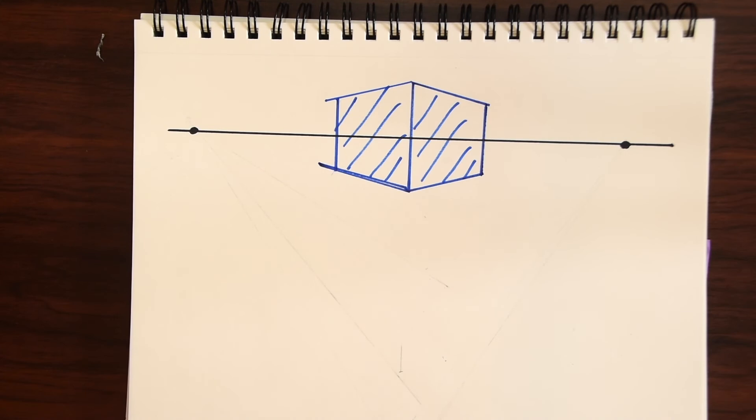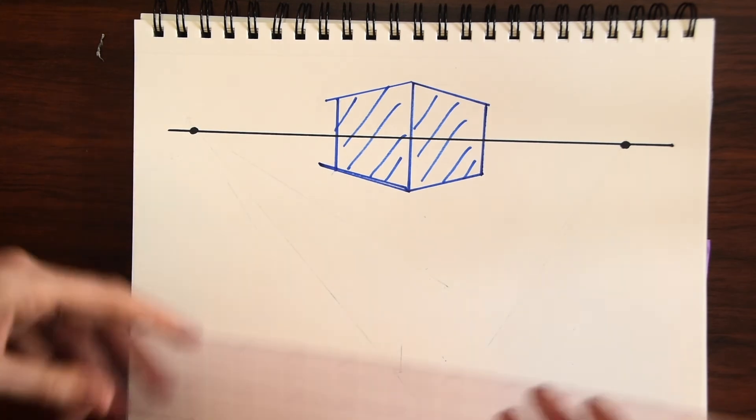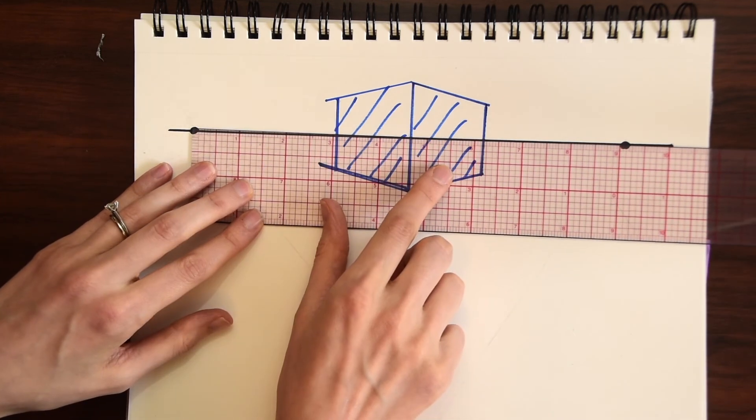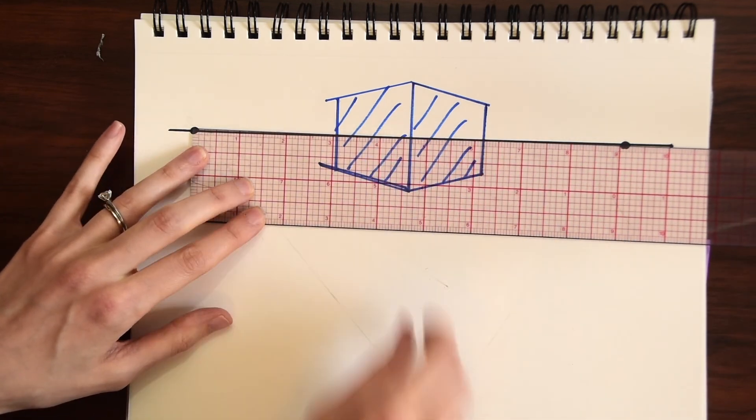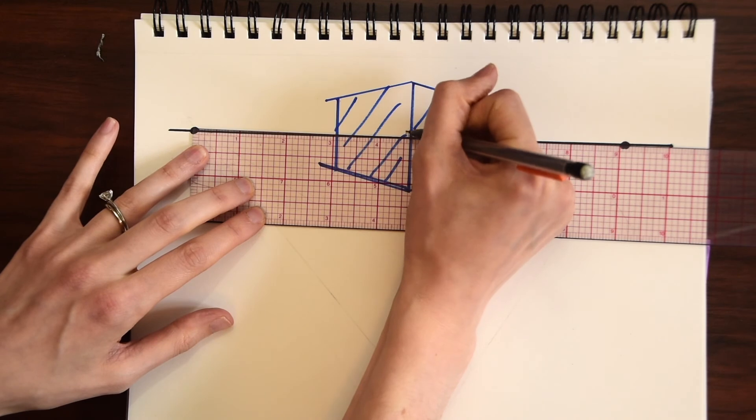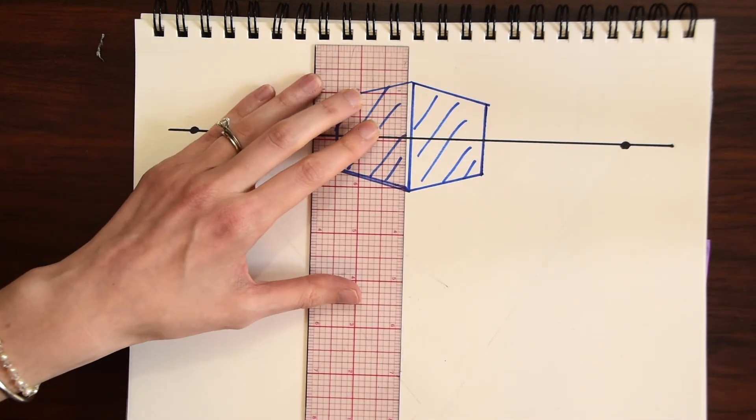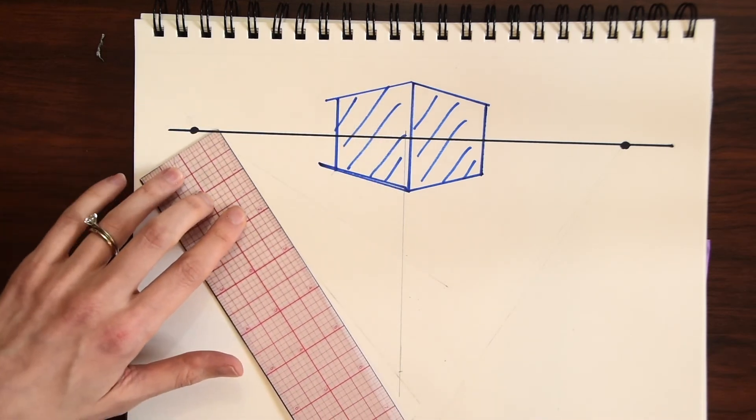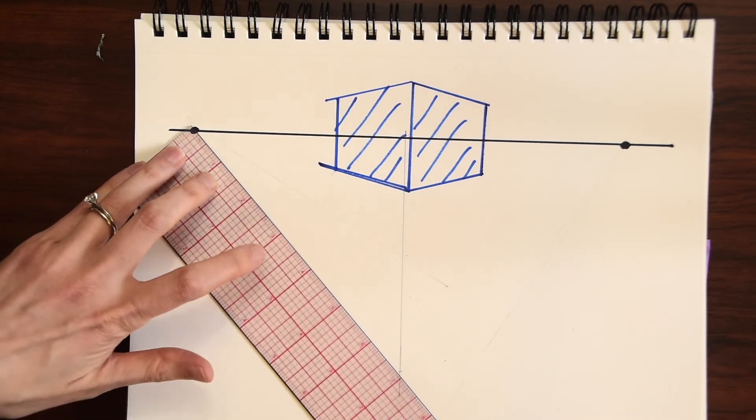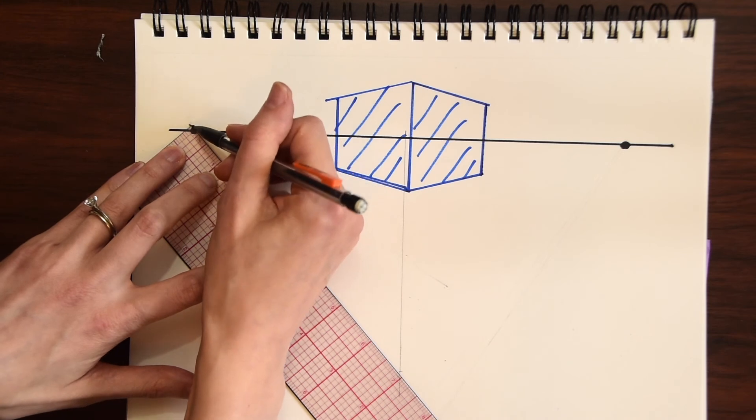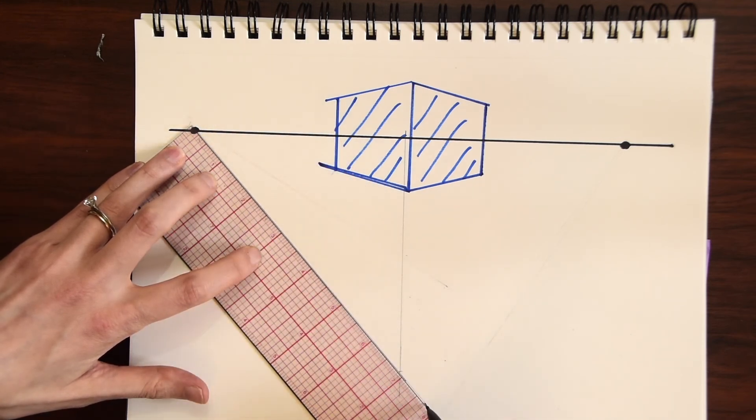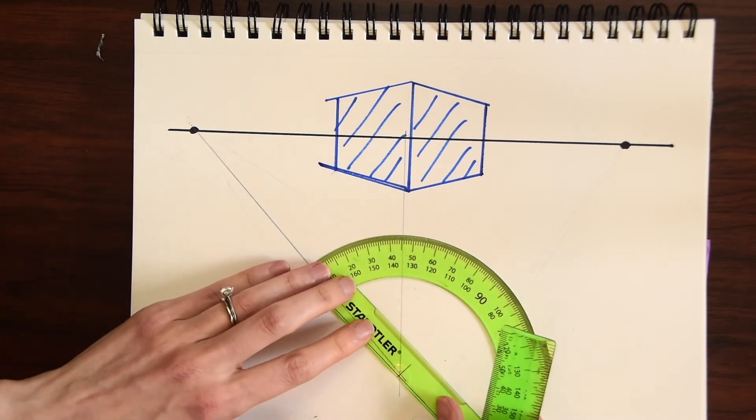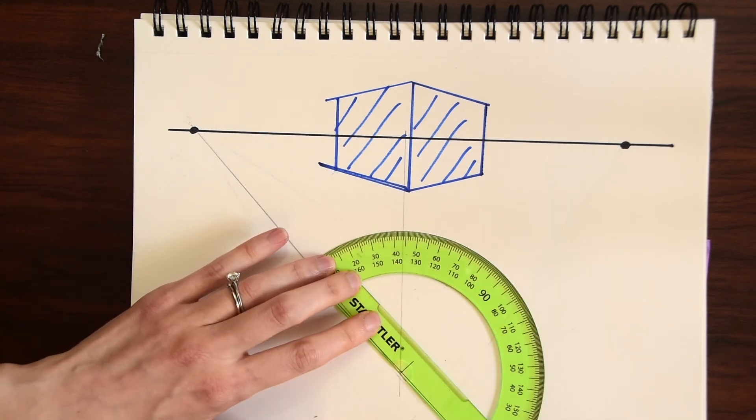So a good rule of thumb to find this 90 degree angle is to split this in half. So the distance between the two vanishing points is nine inches. We want to go to about four and a half inches and we just want to split this in half and then just kind of test out different lines looking for that 90 degree angle between the two. So let's just test out this line and now if we want 90 degrees from this we'll take our protractor.